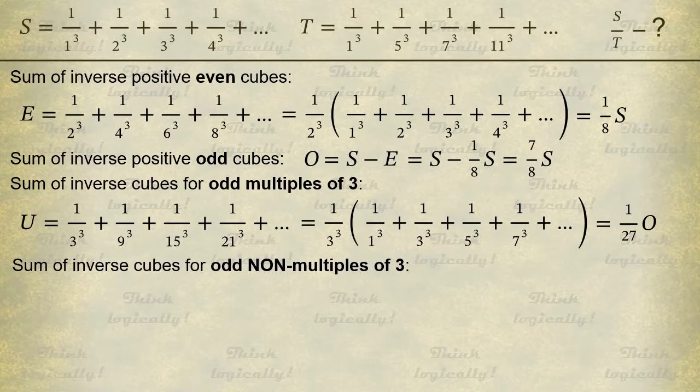So U equals 1 over 27 times O. Finally, we can find our cherished number T, sum of inverse cubes for odd non-multiples of 3. It is just O minus U. And we substitute the value of U to find that T equals 26 over 27 times O.